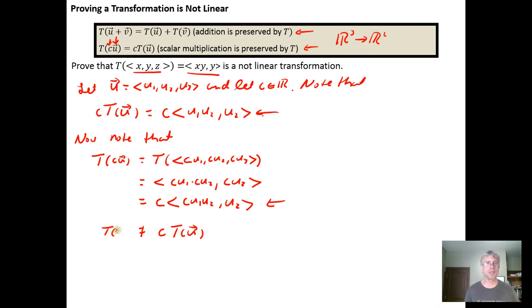And because they aren't the same, we don't have a linear transformation. So because T did not preserve scalar multiplication, T is not linear. And that ends the proof. Again, we didn't need to show that both properties didn't hold. It was sufficient to show one of them didn't work.